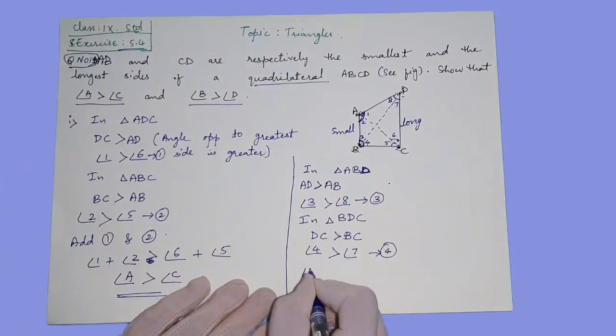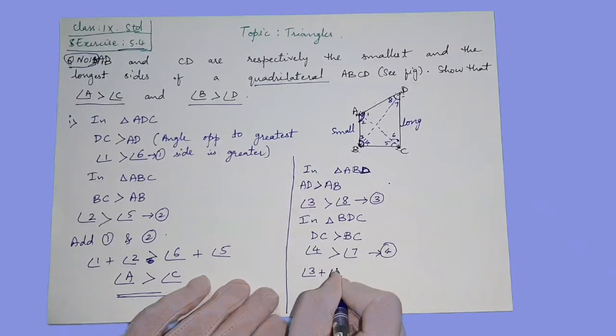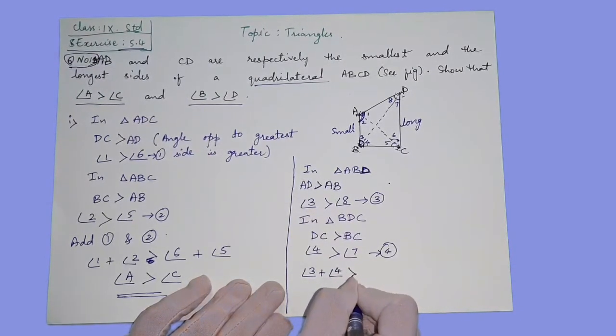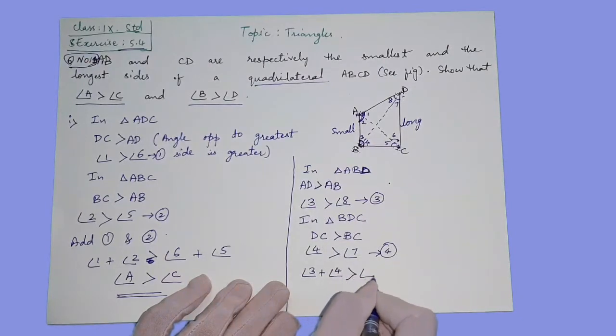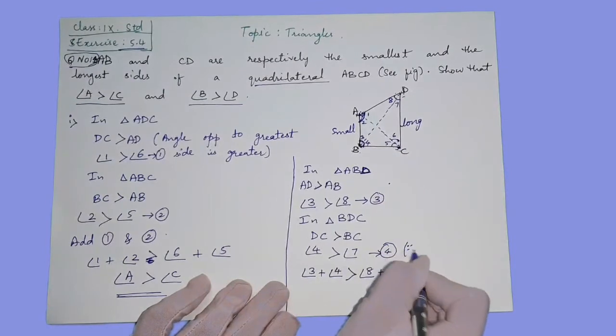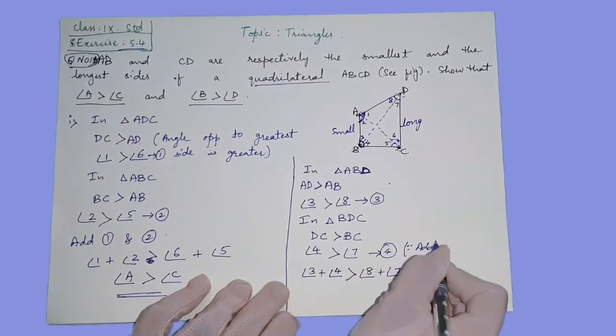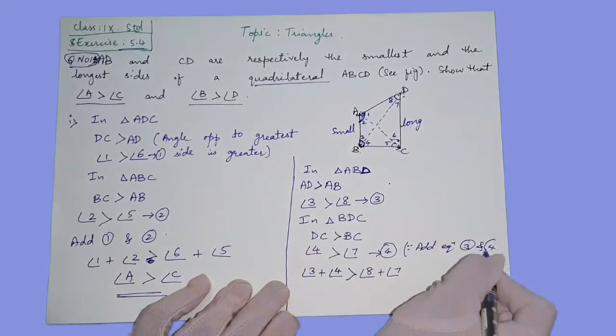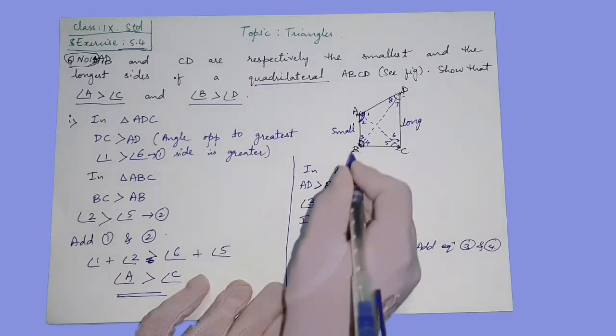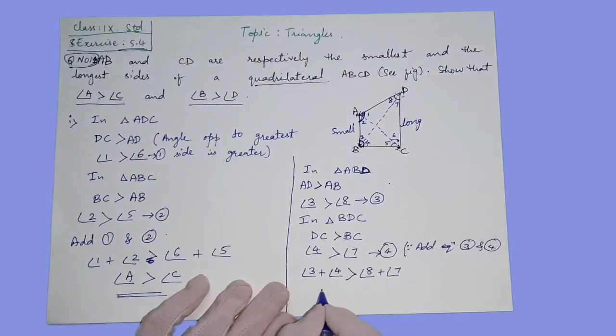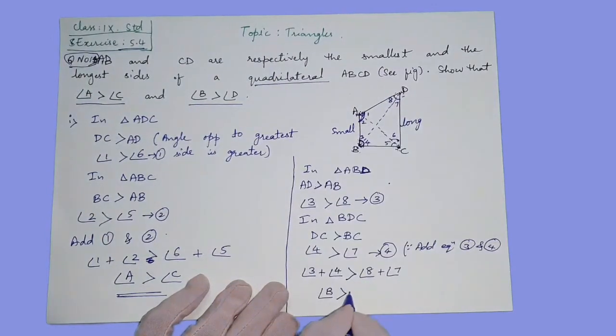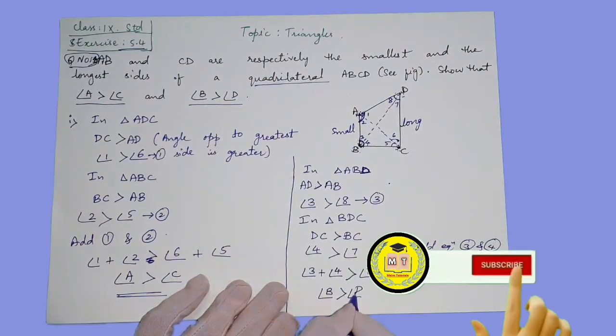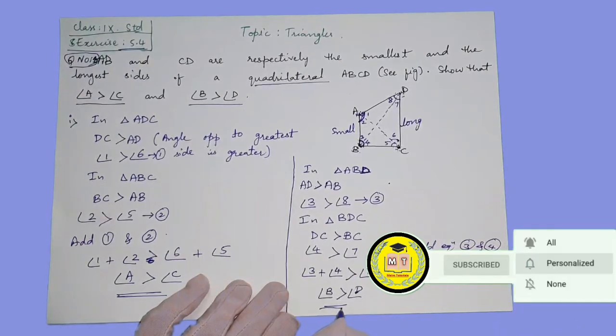Angle 3 plus 4 is greater than angle 8 plus angle 7. Adding equations 3 and 4. So 3 plus 4 together is angle B, and 8 plus 7 is angle D. So angle B is greater than angle D, which is your second result.